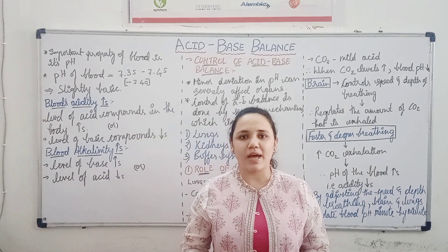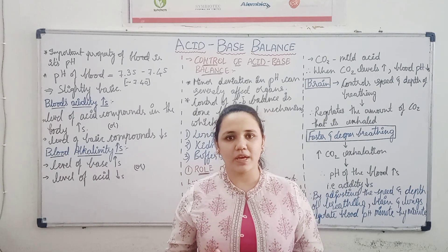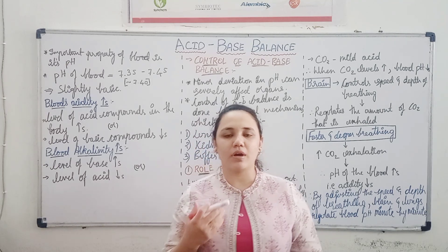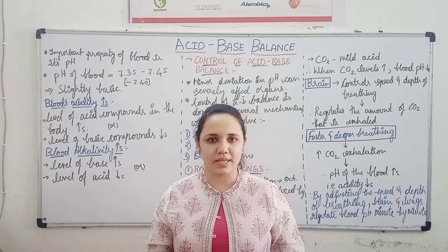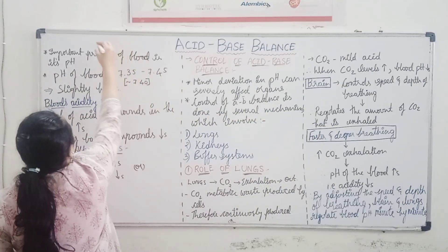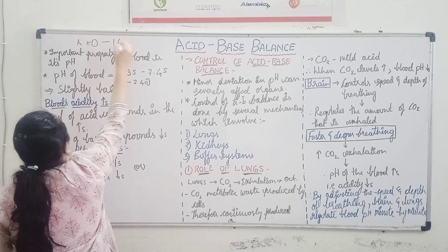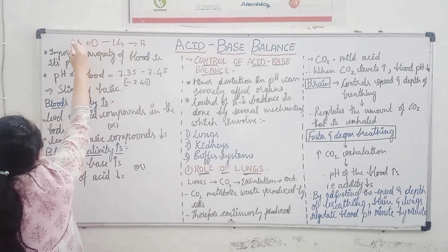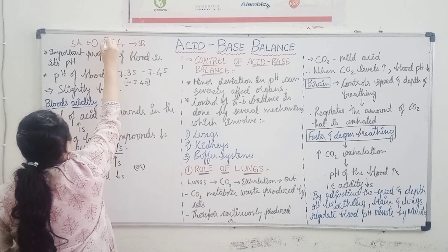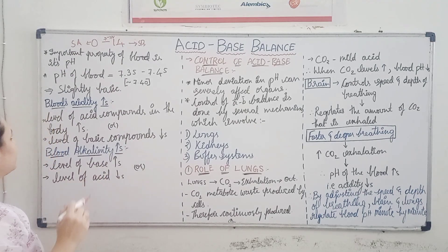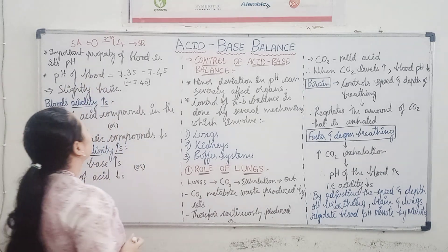Acid and acid-base balance. Basically, just like every other solution, our blood also has a specific pH — a specific acidity and alkalinity. We know that acidity or alkalinity of a solution is indicated by the pH scale. The pH scale range is between 0 and 14: 0 represents strongly acidic, 14 represents strongly basic, and the middle value, 7, represents a neutral pH.